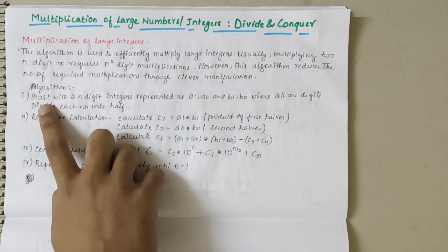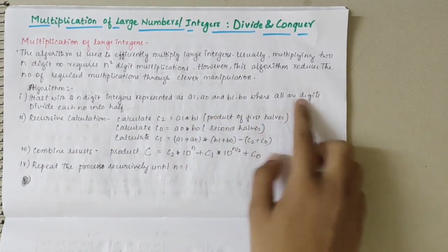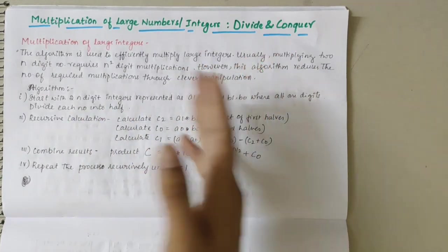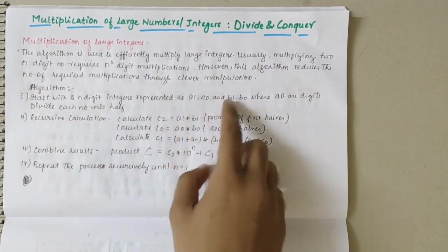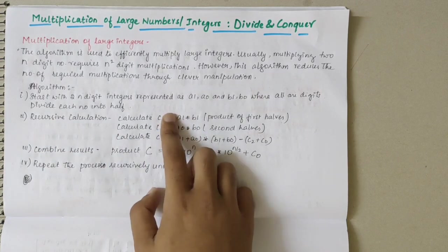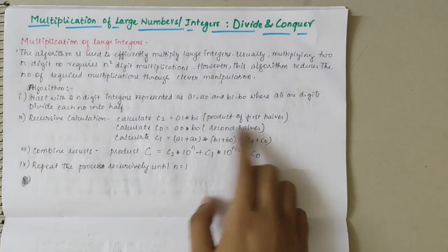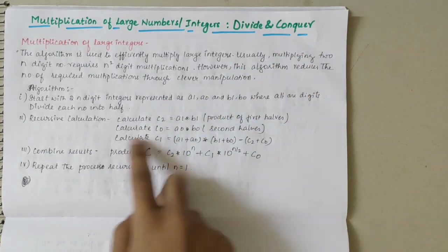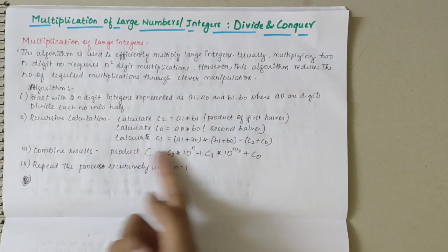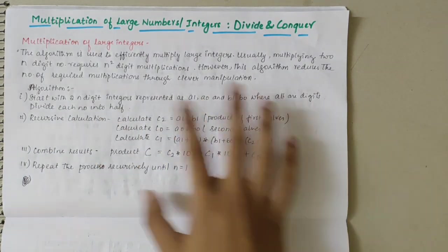We start with two n-digit integers represented as a1, a0, b1, b0 where all are digits. With the given inputs a and b, we divide them into two n-digit integers as a1, a0, b1, and b0. Then in the recursive calculation we need to calculate c2, c0, and c1 — to get the first half product and the second half product. After getting both, we combine them to get the final product c. We repeat this recursively until n equals 1.